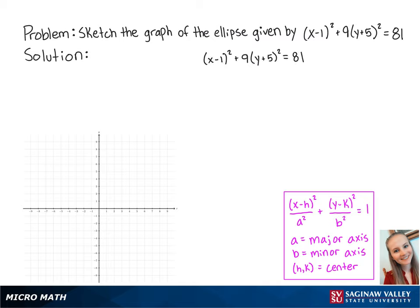First, we need to get our equation into standard form. The first step is to get the right-hand side equal to 1. So we're going to divide both sides by 81. After reducing the fractions, we are left with (x - 1)² over 81 plus (y + 5)² over 9 equals 1.